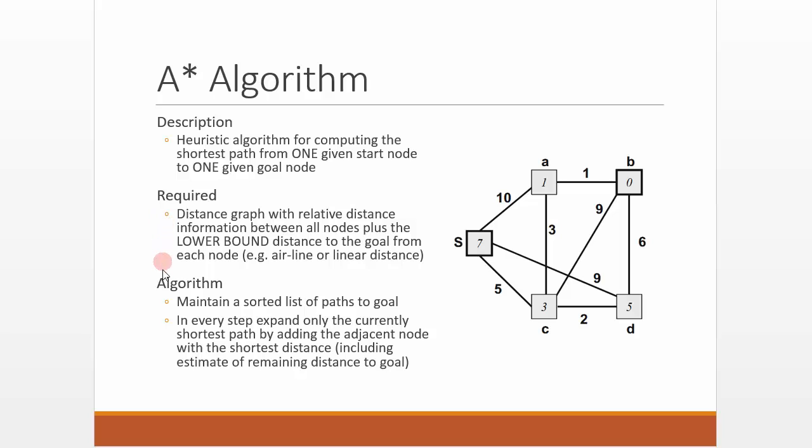The algorithm works as follows: it maintains a sorted list of paths to the goal and in every step we expand only the currently shortest path by adding the adjacent node with the shortest distance. Let's see how this works.